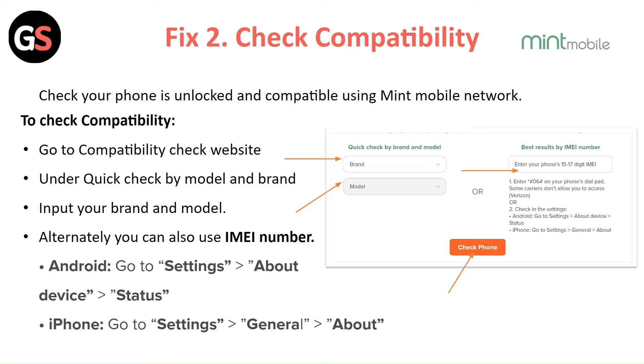For Android: go to Settings, then About Device, then Status to find your IMEI number. For iPhone: go to Settings, then General, then About.